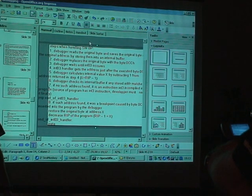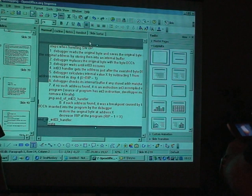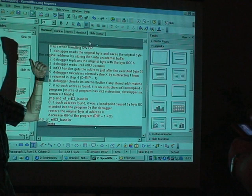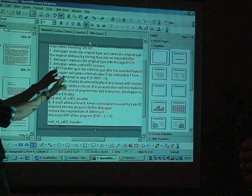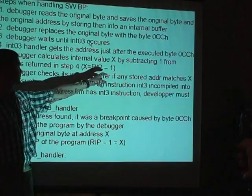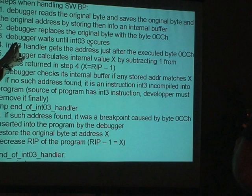The debugger saves the original address into its internal buffer. As the second step, after saving the byte and the address, the debugger replaces the original byte — the first one byte, the starting byte of the instruction — with the one byte CC.